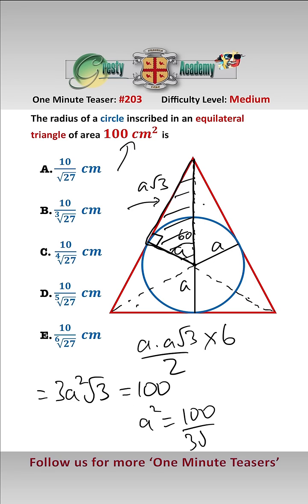a² equals 100 over 3√3, which is 100 over √27. So therefore a is equal to the square root of that, which is 10 over the fourth root of 27 centimeters, which is answer c.